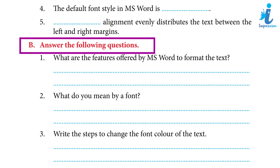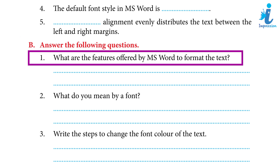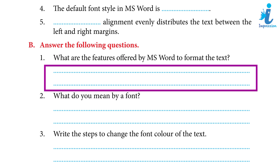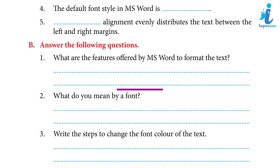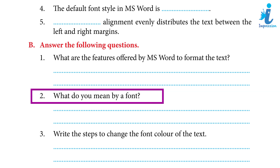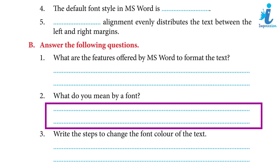Answer the following questions: 1. Features offered by MS Word to format the text are: Font Style, Size and Color; Text Case and Alignment; Border and Shading Effect. 2. A font refers to the size, design, color and style of typed characters within a document. To add variations to a document, we can use different fonts such as separate font styles for the heading and the body.